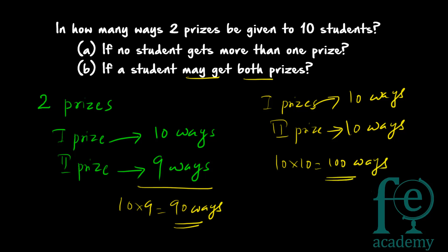To summarize: in the first case, the first prize can be given in 10 ways but the second prize can only be given in 9 ways because one student should not get both prizes — so there are 90 ways. In the second case, a student may get more than one prize, so both prizes can each be given in 10 ways, giving 100 ways total.